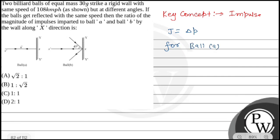It's gone and reflected in the direction. So delta P, what will happen for this case? Delta P is equal to 2MV. So impulse for ball A will be 2MV.